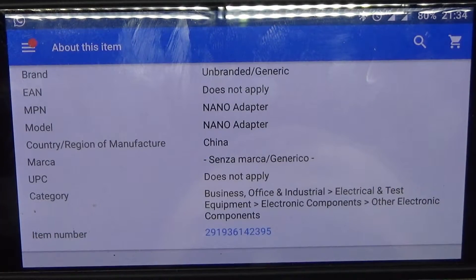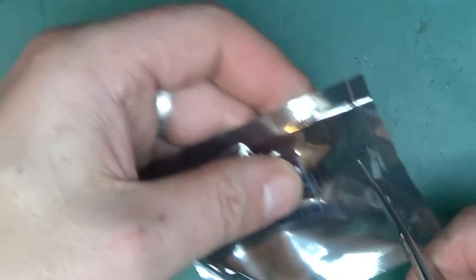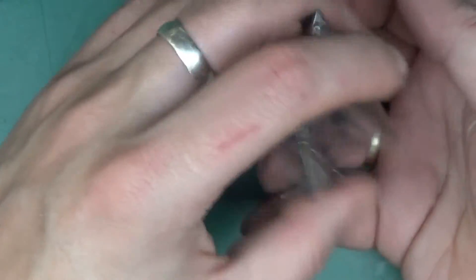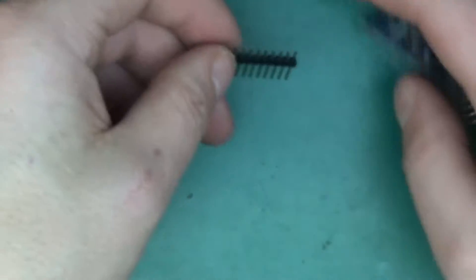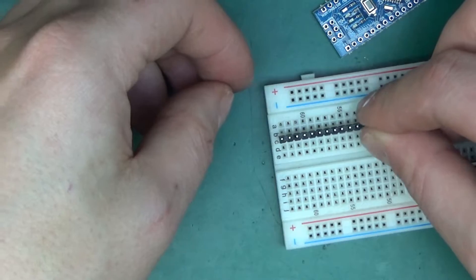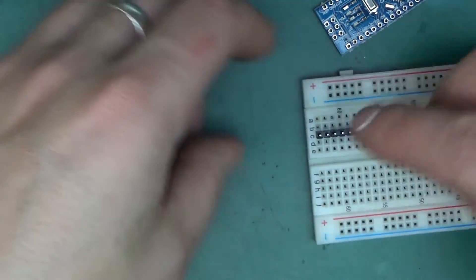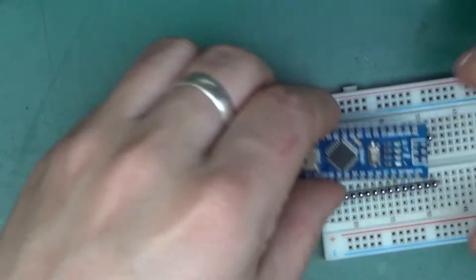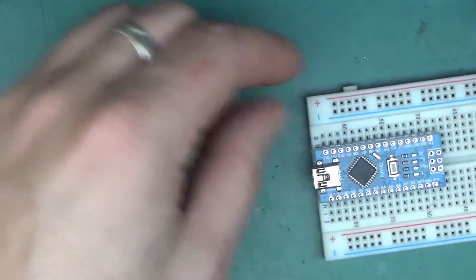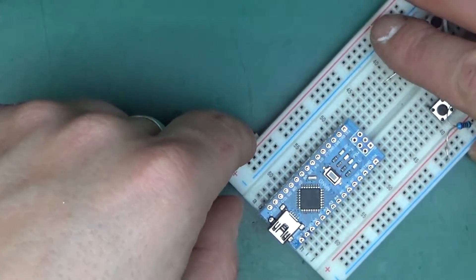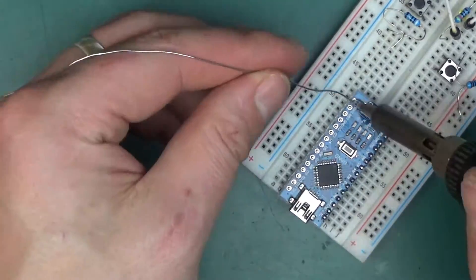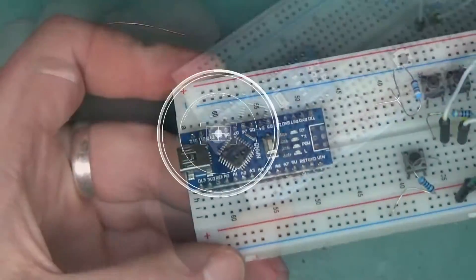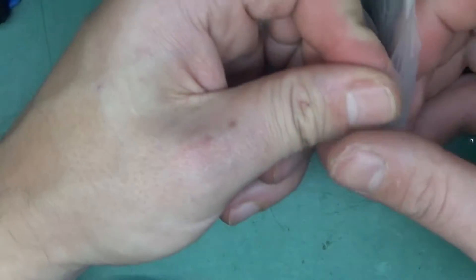This one's item number is 252461127172, and the first one's item number was 291936142395. To solder the Arduino together, it's really handy to use a breadboard as a kind of jig to keep everything straight while you're soldering. So if you just put the headers into a breadboard like so and then put the Arduino on top, you can be sure that all the pins are straight. That's done.